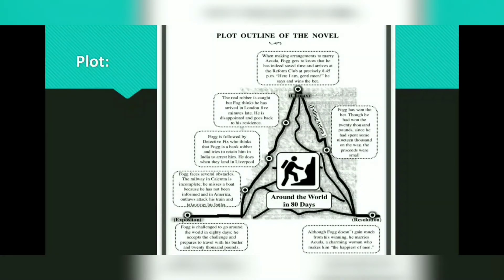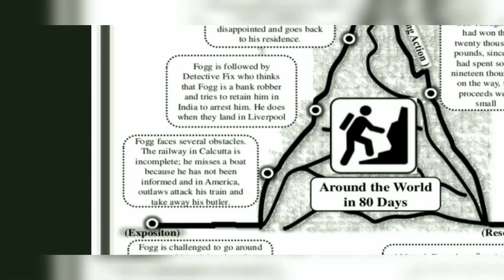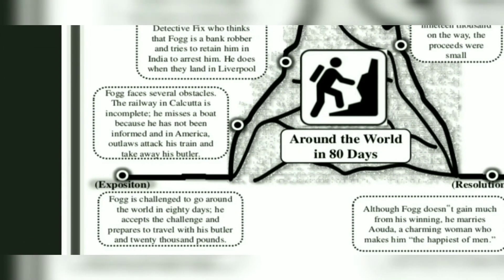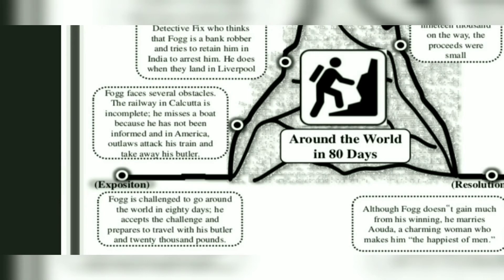Let's see the plot outline of the novel. We see exposition, then rising action, then climax, then falling action, and finally resolution. In the exposition, Fogg is challenged to go around the world in 80 days. He accepts the challenge and prepares to travel with his butler and 20,000 pounds.